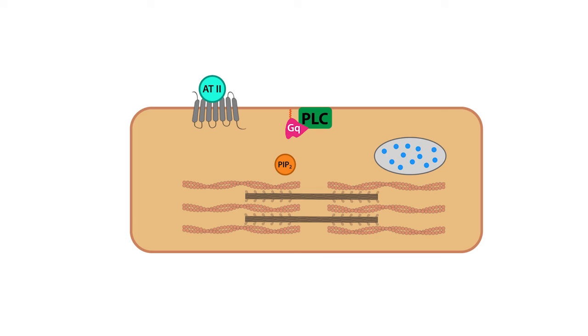This, in turn, leads to the production of two important signaling molecules, known as diacylglycerol or DAG, and inositol triphosphate or IP3 from the precursor molecule, phosphatidyl inositol 4,5-bisphosphate or just PIP2.